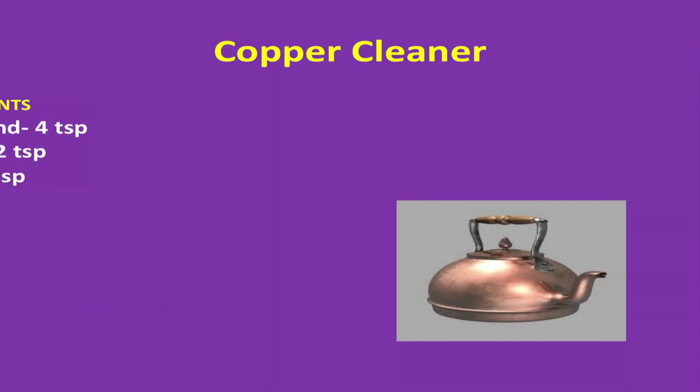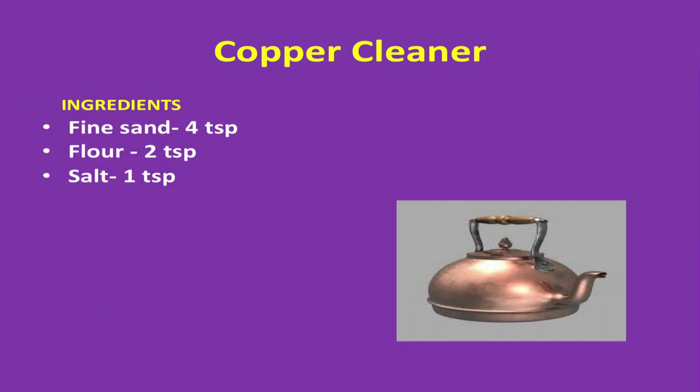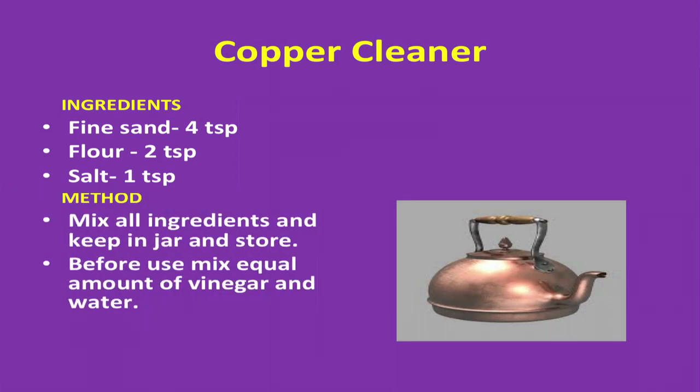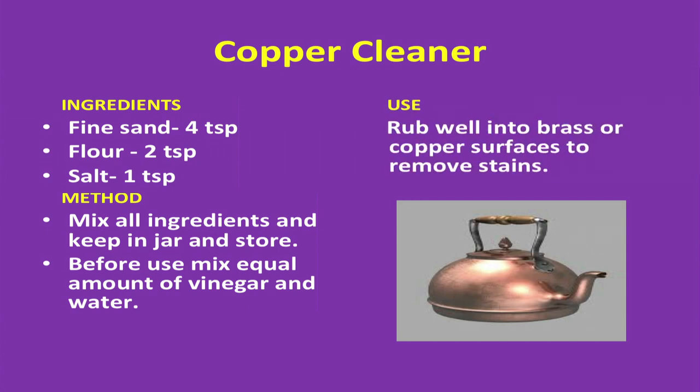Copper cleaner — ingredients: fine cyan 4 teaspoons, flour 2 teaspoons, salt 1 teaspoon. Method: mix all ingredients and keep in a jar. Moisten a small amount of the above mixture to a paste by using equal amounts of vinegar and water. Use: rub well into brass or copper surfaces to remove stains.